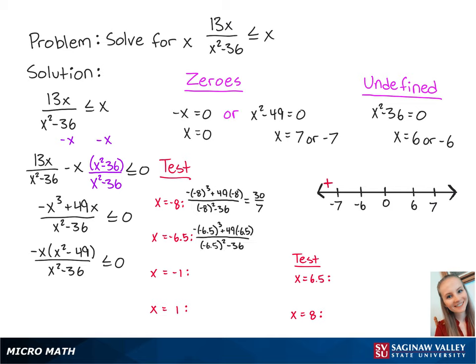For x equals negative 6 and a half, we have negative 702 over 100. Since this number is negative, this means that x values between negative 7 and negative 6 will make the left side of the inequality negative. For x equals negative 1, we have 48 thirty-fifths. Since this number is positive, this means that x values between negative 6 and 0 will make the left side of the inequality positive.